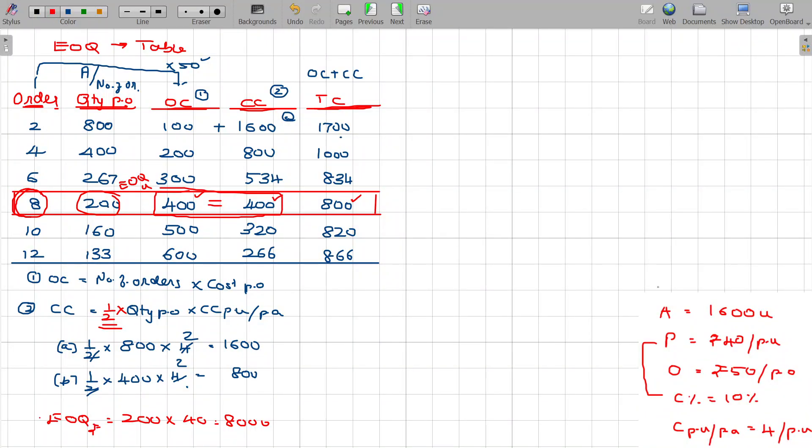So, the same illustration - annual consumption, price, ordering cost and carrying cost percentage as well as carrying cost per unit per annum. I am going to find out the EOQ under tabular model.